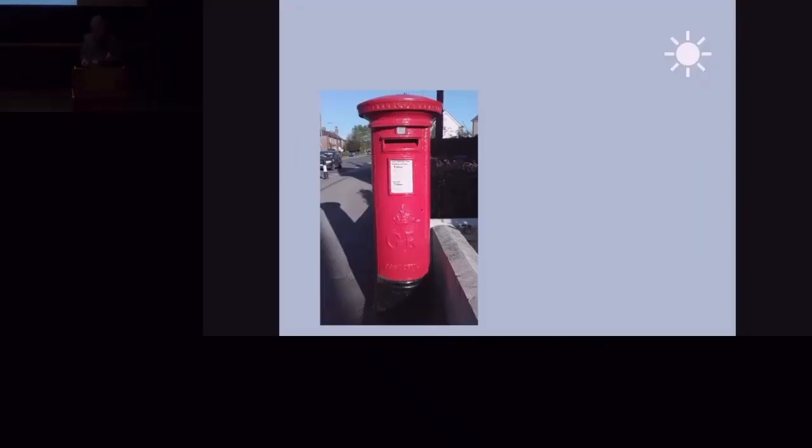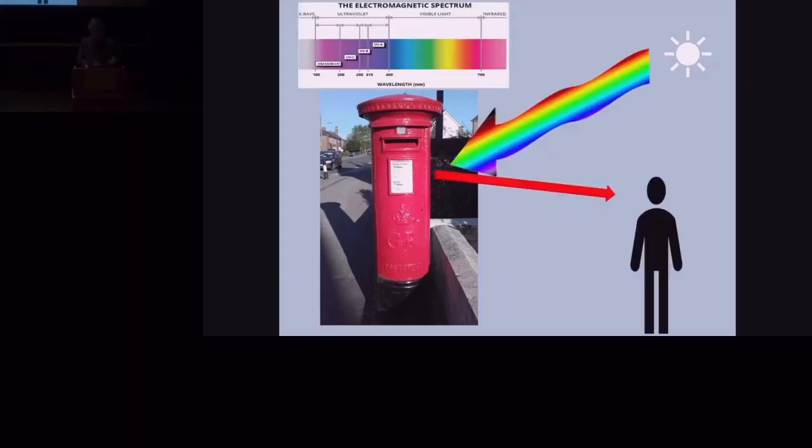So starting at the very basics, why is that letterbox red? You're sitting there thinking because it's painted with red paint, but there's white light from the sun. You learnt at school because the white light from the sun is a range of wavelengths that in the visible spectrum go from violet through to red. The red paint has a pigment and that has the special property of absorbing the wavelengths that are not red and it reflects red. So we see a red post box.